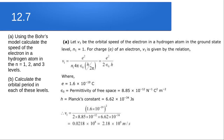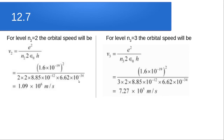The speed of an electron is given by v = e²/(2ε₀h), where e is the charge on the electron, ε₀ is the permittivity of free space, and h is Planck's constant, divided by orbit number n. For n = 1: v = 2.18 × 10⁶ m/s. For n = 2: v = 1.09 × 10⁶ m/s. For n = 3: v = 7.27 × 10⁵ m/s.